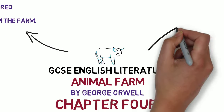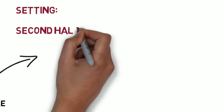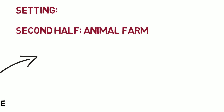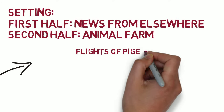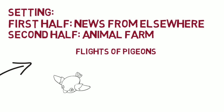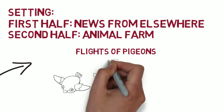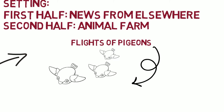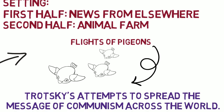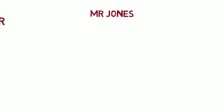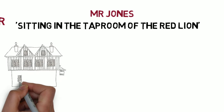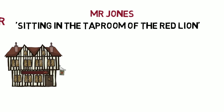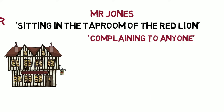The second half of this chapter is set on Animal Farm as the Battle of the Cow Shed takes place there, but the opening tells us of news from elsewhere. We learn that Snowball and Napoleon sent out flights of pigeons to mingle with the animals on neighbouring farms, tell them the story of the rebellion, and teach them the tune of Beasts of England. Here we see the propaganda machine in action, which mirrors Trotsky's attempts to spread the message of communism across the world. Trotsky believed that the future of communism depended on it becoming an international movement. We are also told of Mr Jones sitting in the tap room of the Red Lion at Willingdon — a very traditional pub name — where Jones is complaining to anyone about the rebellion.